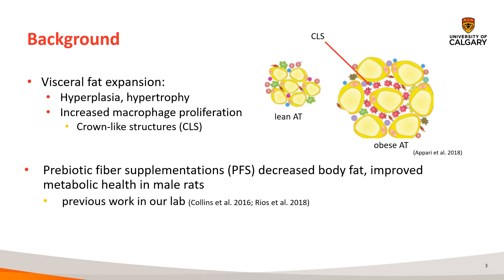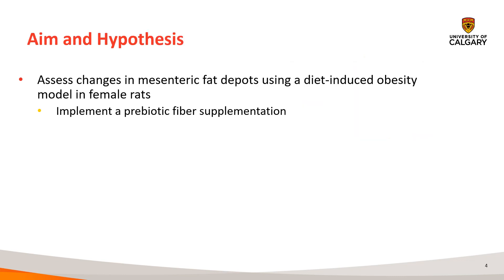Previous work in our lab has studied obesity and metabolic health through the feeding of obesogenic diets in male rats. One study introduced a prebiotic fiber supplementation, which showed to decrease body fat and improve metabolic health in that male rat model, counteracting the presumed effects of an obesogenic diet. The aim of our study was to assess changes in mesenteric fat using a diet-induced obesity model, but in female rats.